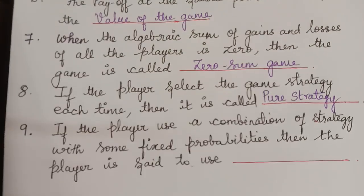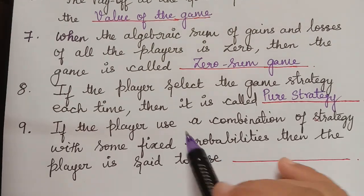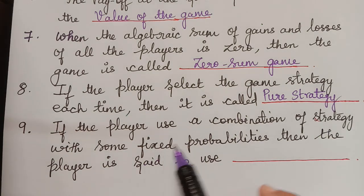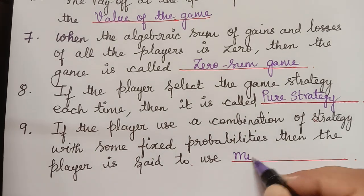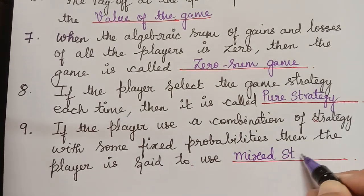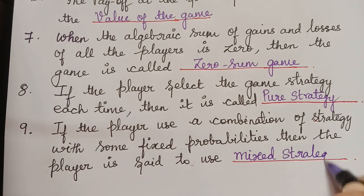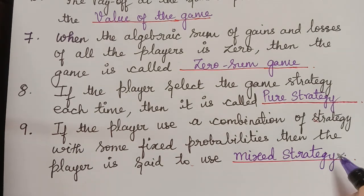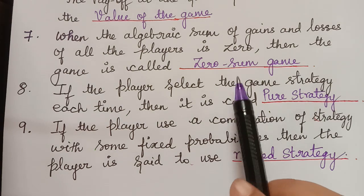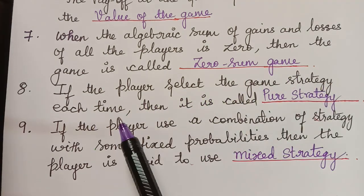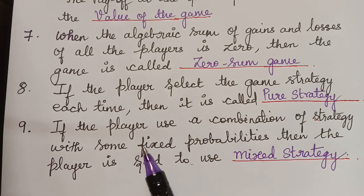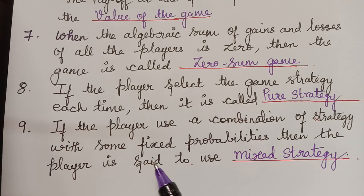The next question is: if the player uses a combination of strategies with some fixed probabilities, then the player is said to use a mixed strategy. In summary, selecting the same strategy each time is a pure strategy, while using a combination with fixed probabilities is a mixed strategy.